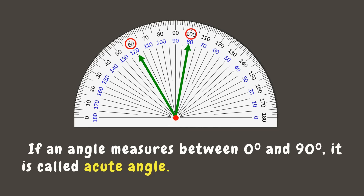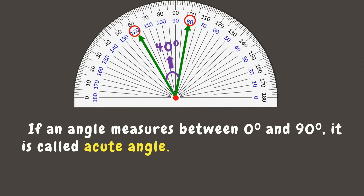Here we can see an angle that falls between 60 degrees and 100 degrees. To know the exact measurement, just subtract the two degrees: 100 minus 60 equals 40 degrees. You can also use the inner scale: 120 minus 80, which is also 40 degrees. Since it's less than 90 degrees, it is also an acute angle. Here are some objects that show the acute angle.